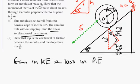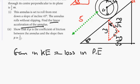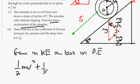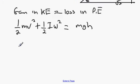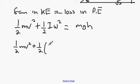Gain in kinetic energy equals loss in potential energy. So: half mv² plus half I·ω² equals mgh. The inertia is 5/2 m. We change omega using ω = v/r, so ω² = v²/r².